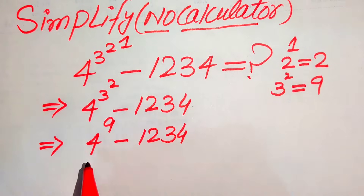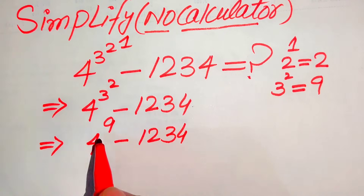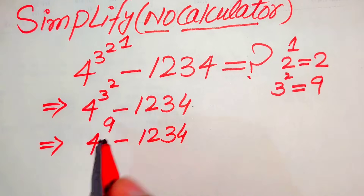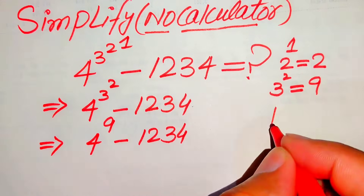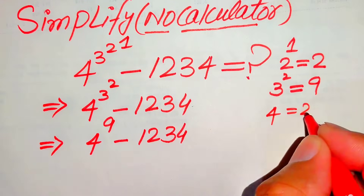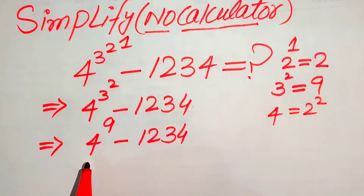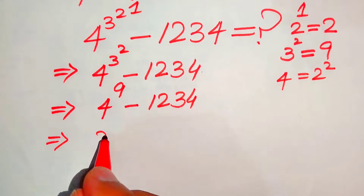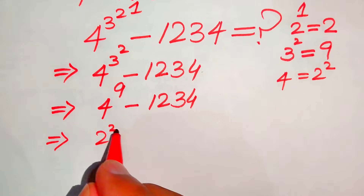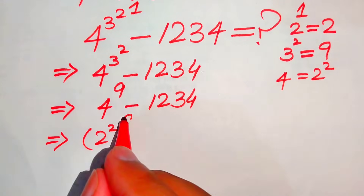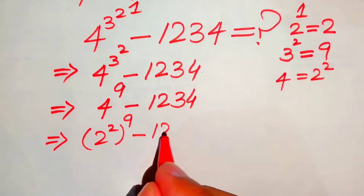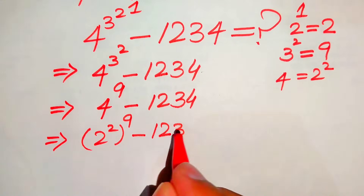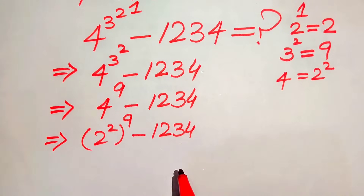After replacing, the expression becomes 4 to the power of 9 minus 1234. In the next step, we need to break the base 4. We know that 4 equals 2 squared, so we rewrite the base in this form: it is 2 squared with the whole power of 9 minus 1234.